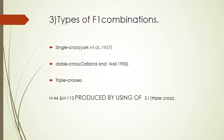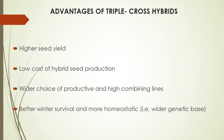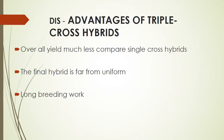Types of F1 combinations include single, double, and three-way crosses. Advantages of triple cross hybrids: higher seed yield, lower cost of hybrid seed production, wider choice of productive and high-combining lines, better winter survival, and more heterotic — i.e., wider genetic base. Disadvantage: overall yield much less compared to single cross hybrids; the final hybrid is far from uniform and has a long breeding period. However, double cross yields more but is more tedious to develop than triple cross.